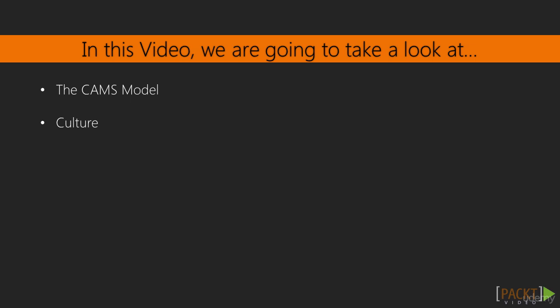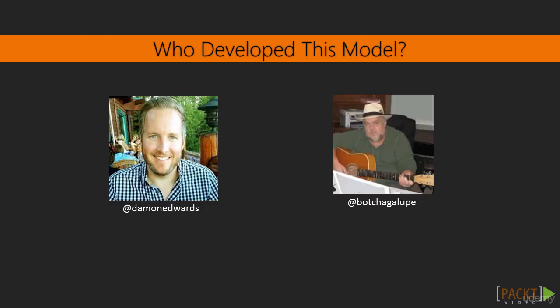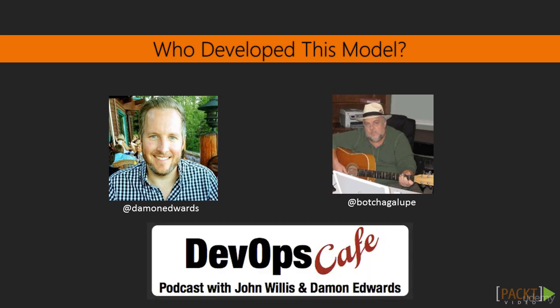So where did this model come from? It came from Damon Edwards and John Willis, who you may know as the hosts of the DevOps Cafe podcast. If you haven't checked out this podcast, I highly recommend it. They regularly have guests who give all kinds of new perspectives on DevOps, ensuring that every single week you're going to learn something new. They were looking for a way to describe DevOps in terms of practices — what are the kinds of things that people actually do that make up DevOps?